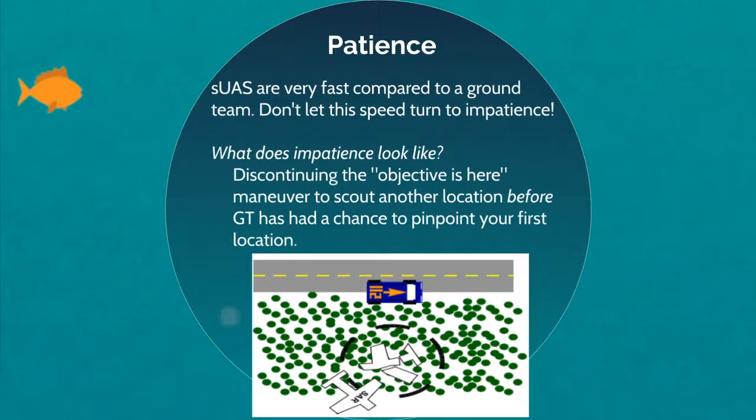Ground teams are often navigating unfriendly terrain while loaded with gear. Comparatively, an SUAS can get to any given target much faster. If a ground team is relying on you to lead them in somewhere or to continue circling over an object until they arrive, demonstrate patience by waiting for them and following through on the first target before continuing to check on other targets.